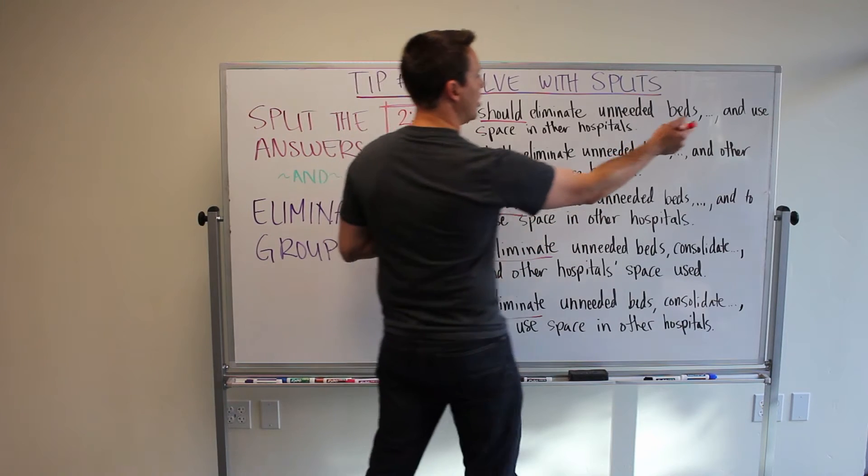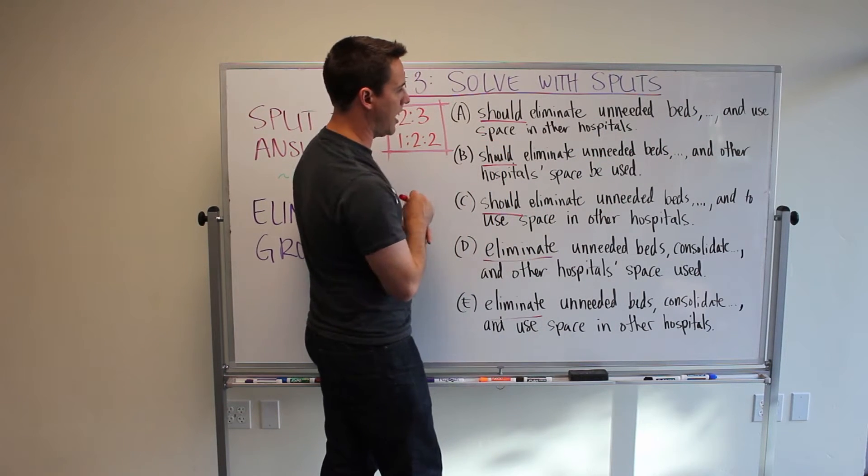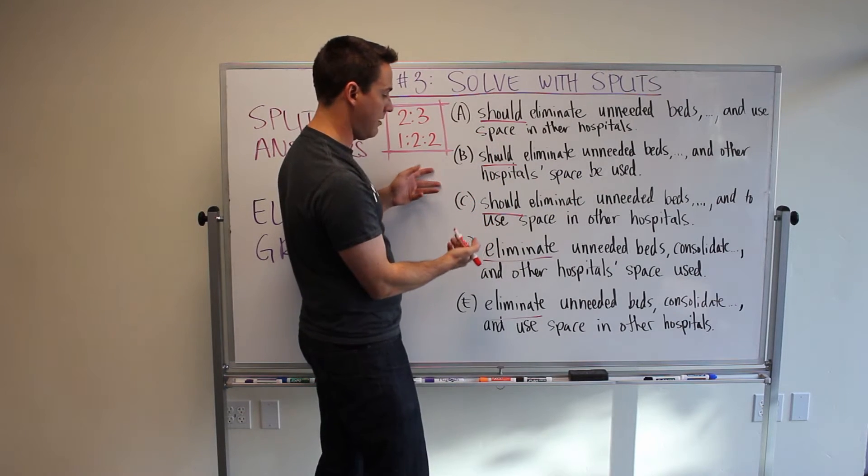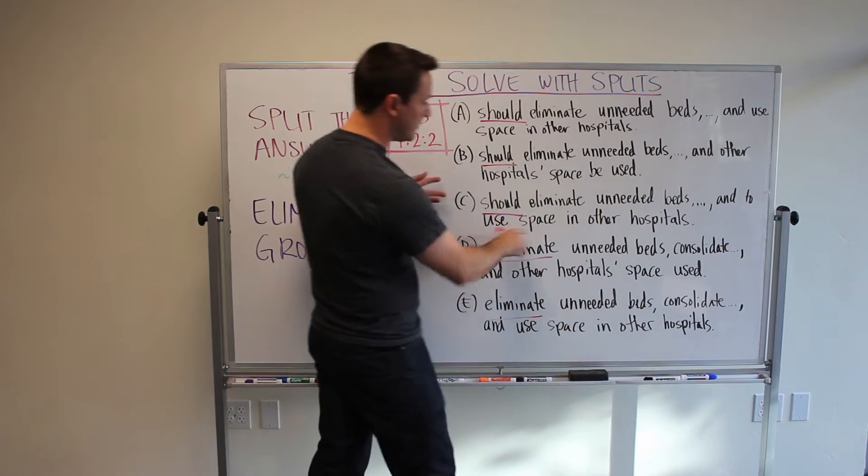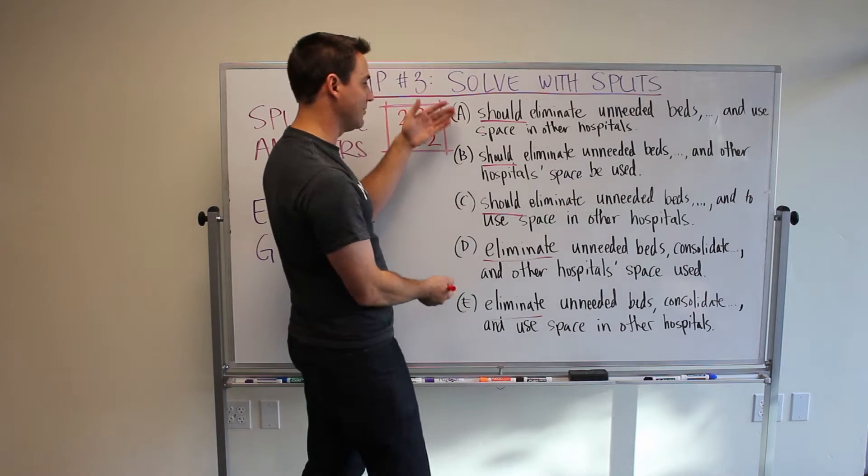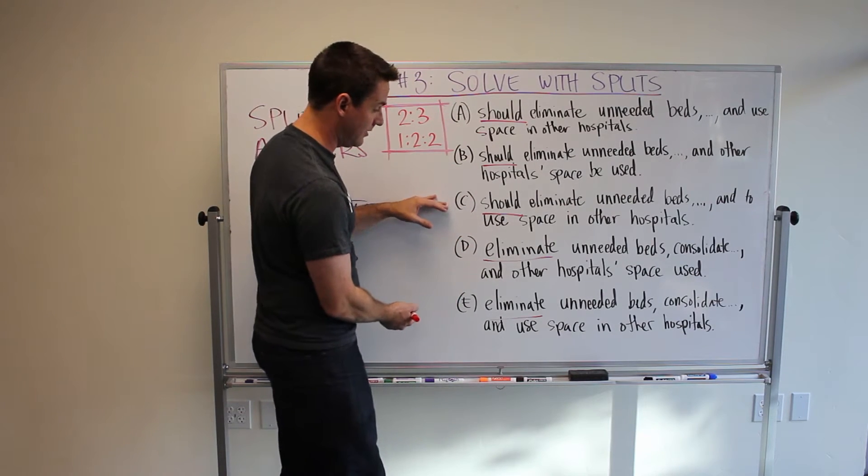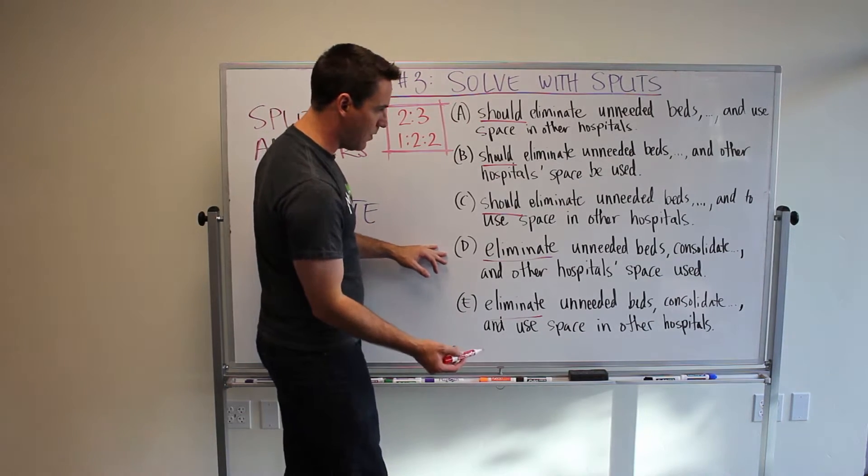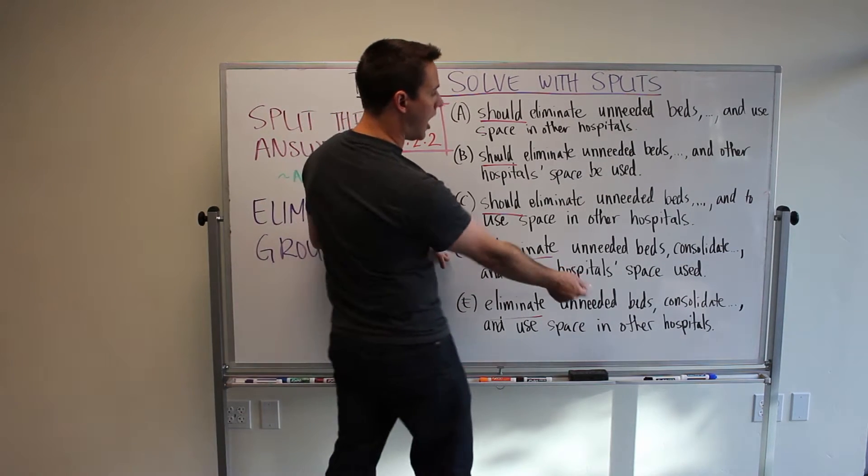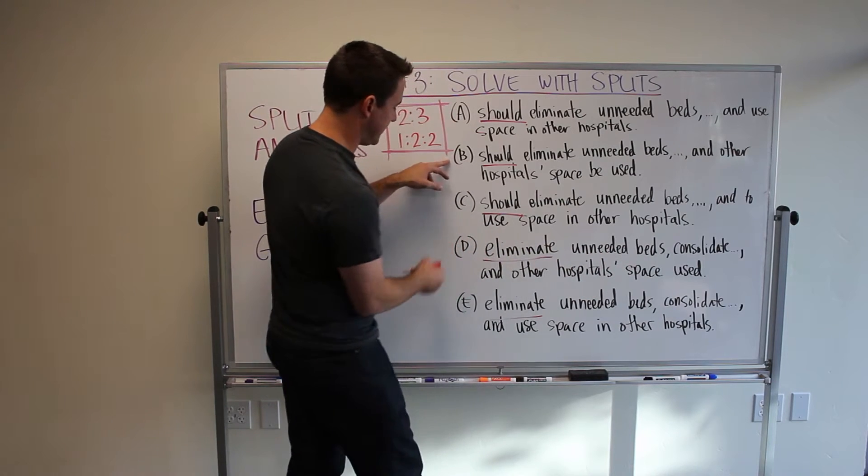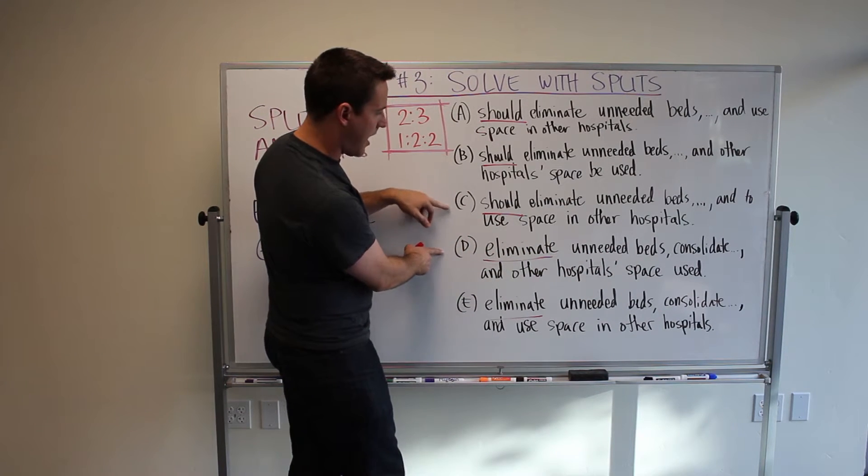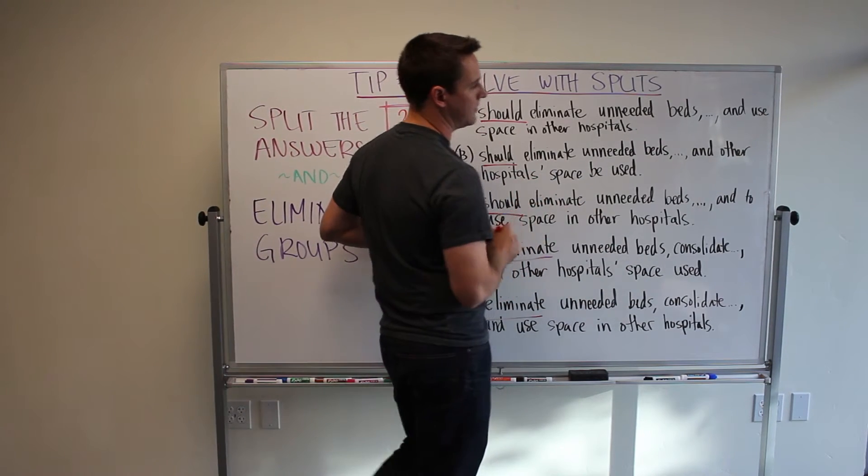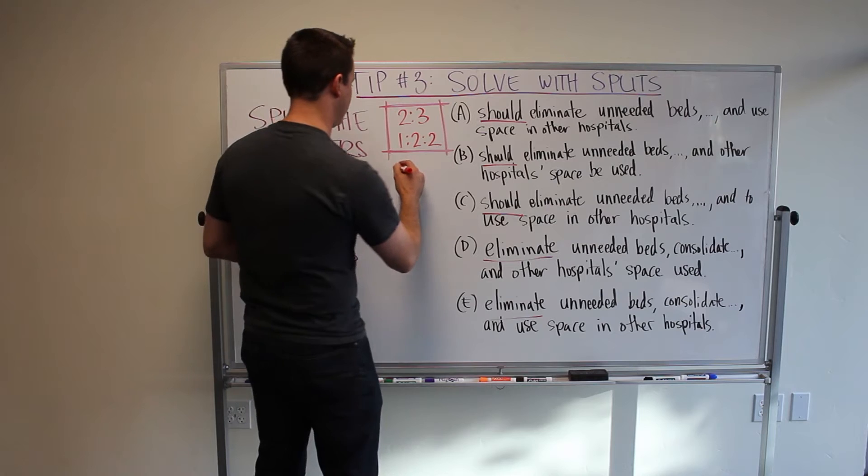So let's see what the difference is. We have used space in other hospitals. We have other hospital space, so those two aren't the same yet. To use space in other hospitals, none of those are the same, so it's actually different, different, different. And then if we continue down and look for more, we can see other hospitals space, oh, that's the same. So, B and D are the same. And then we have used to use and here we have used space in other hospitals. So, actually, here we have, I was wrong,